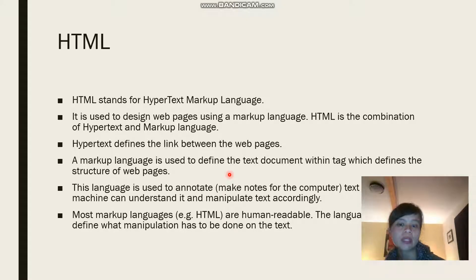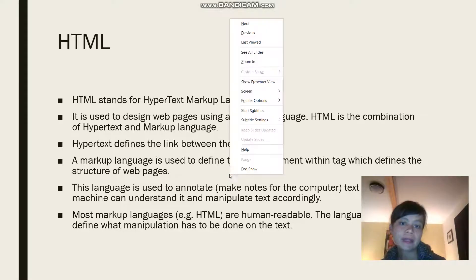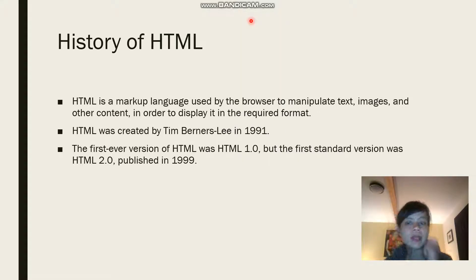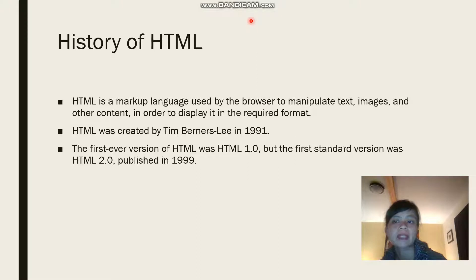Most markup languages, like HTML, are human readable. The language defines what manipulation has to be done on the text. HTML is a markup language used by the browser to manipulate text, images, and other content in order to display it in the required format.